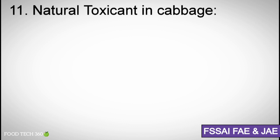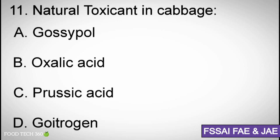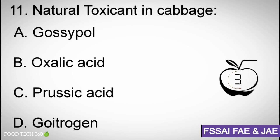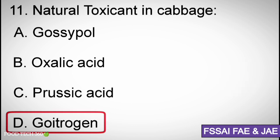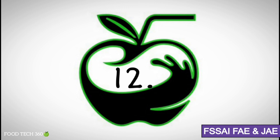Question number 11: Natural toxicant in cabbage. Options: A. Gossypol, B. Oxalic acid, C. Prussic acid, D. Goitrogen. Correct answer: D. Goitrogen.